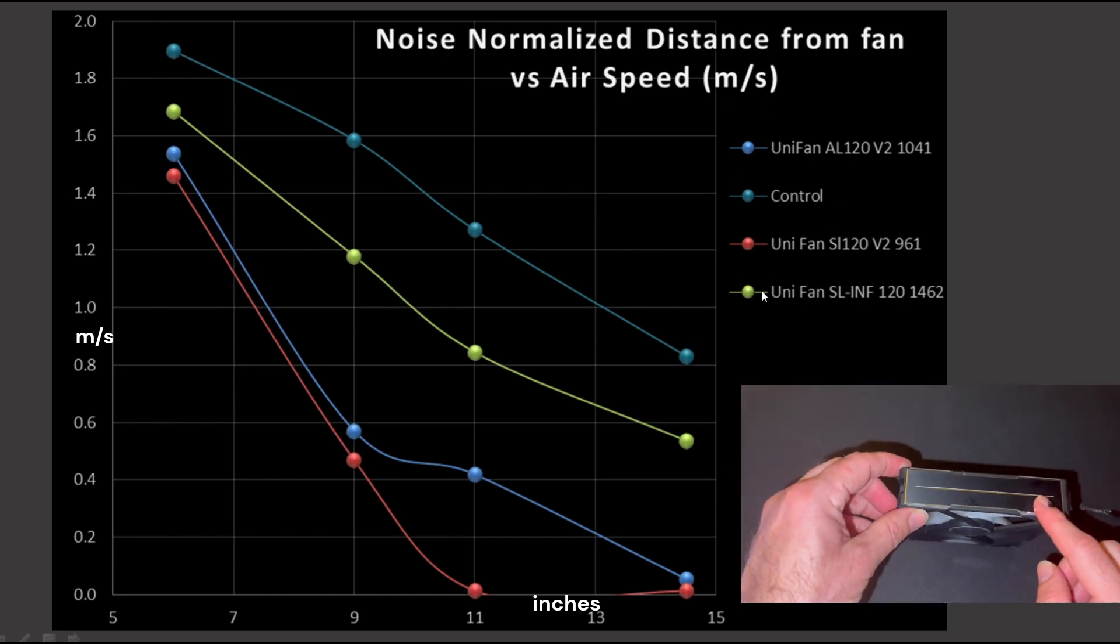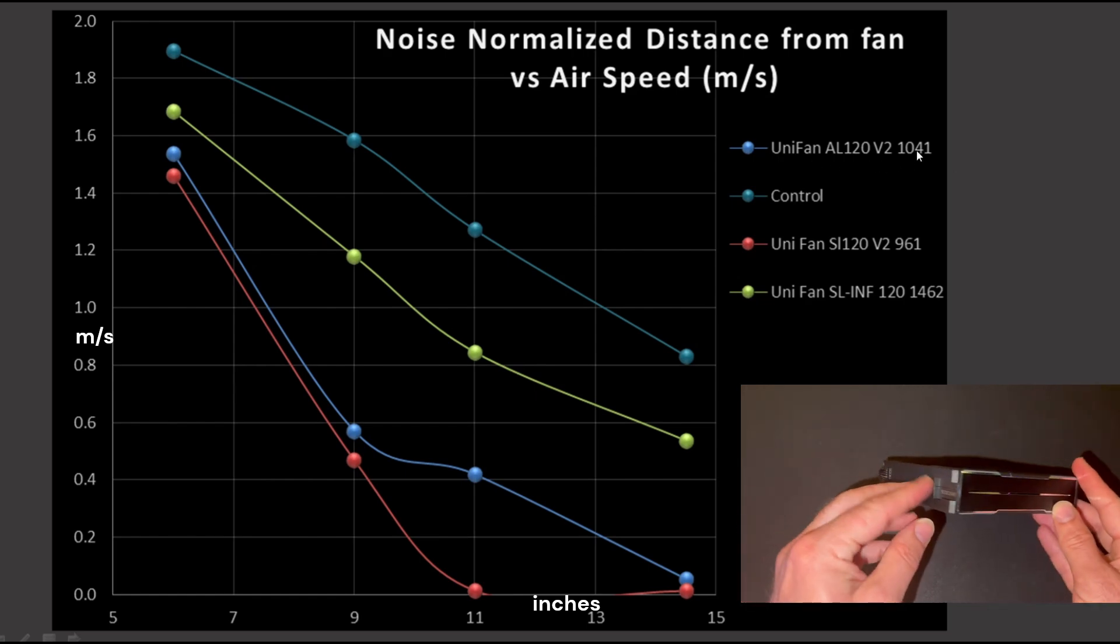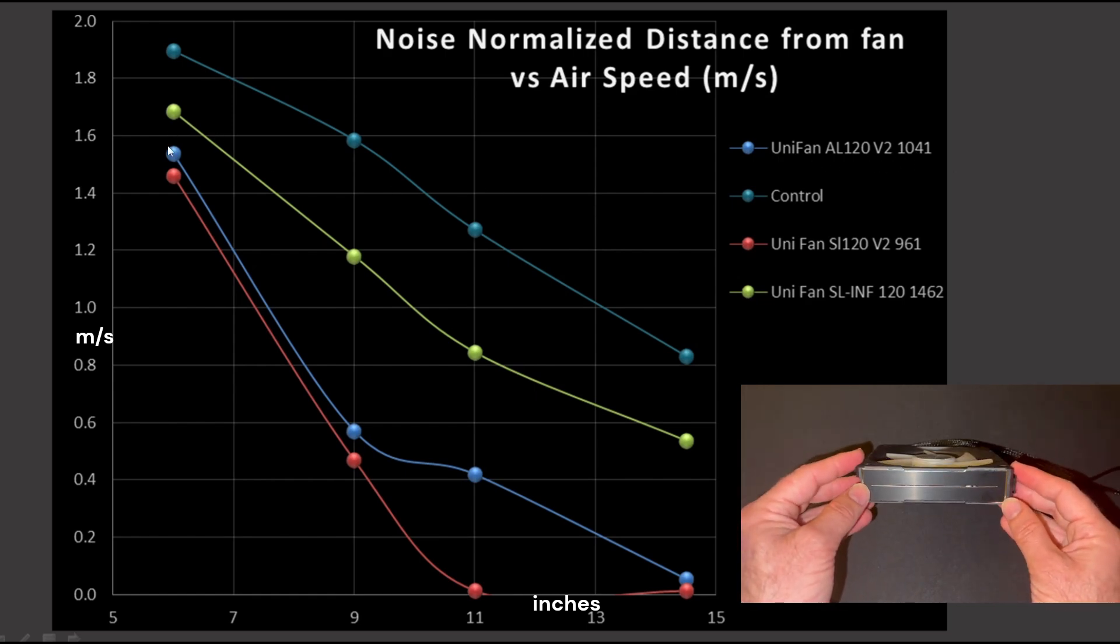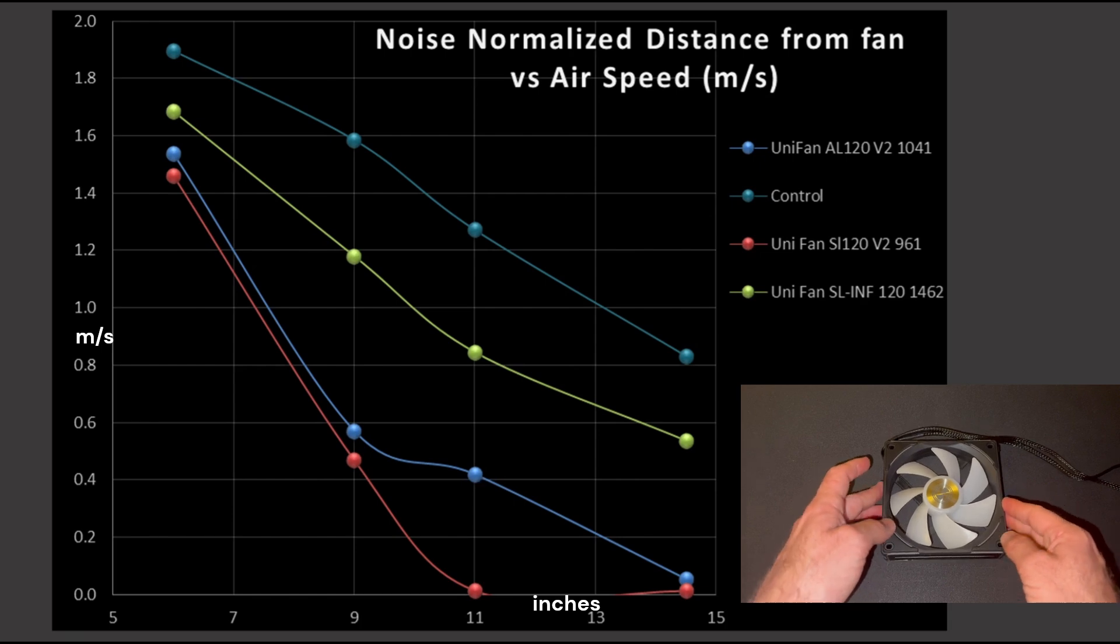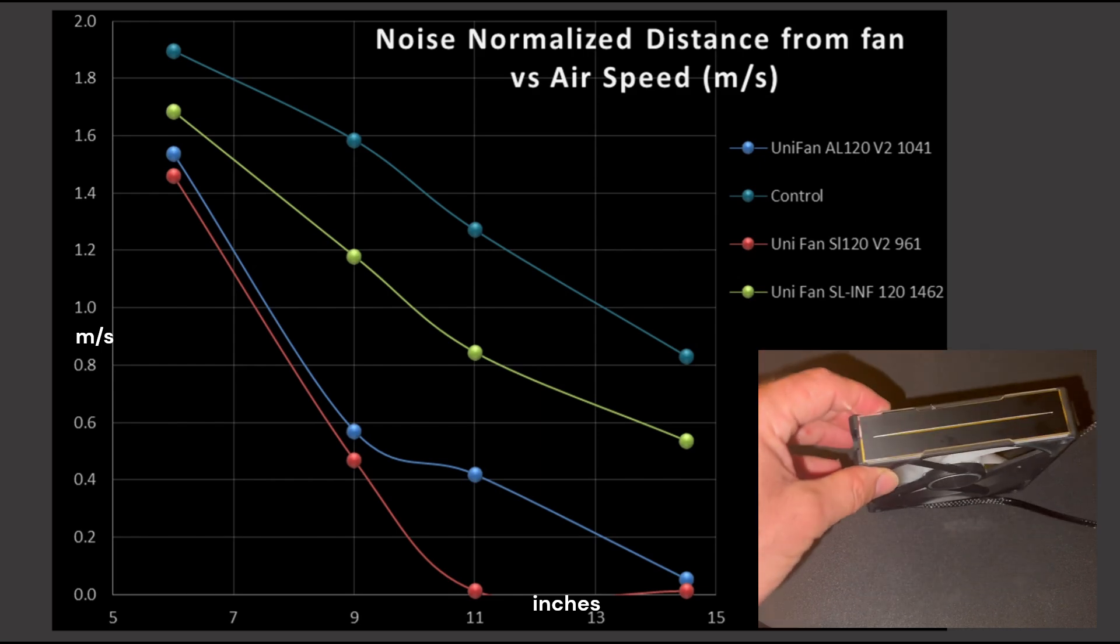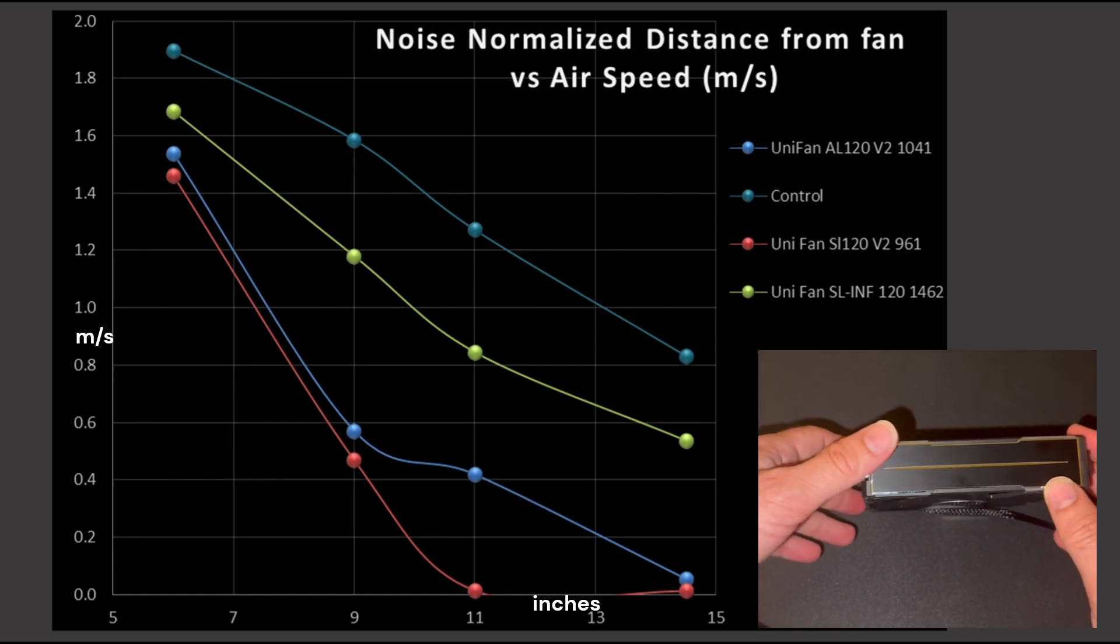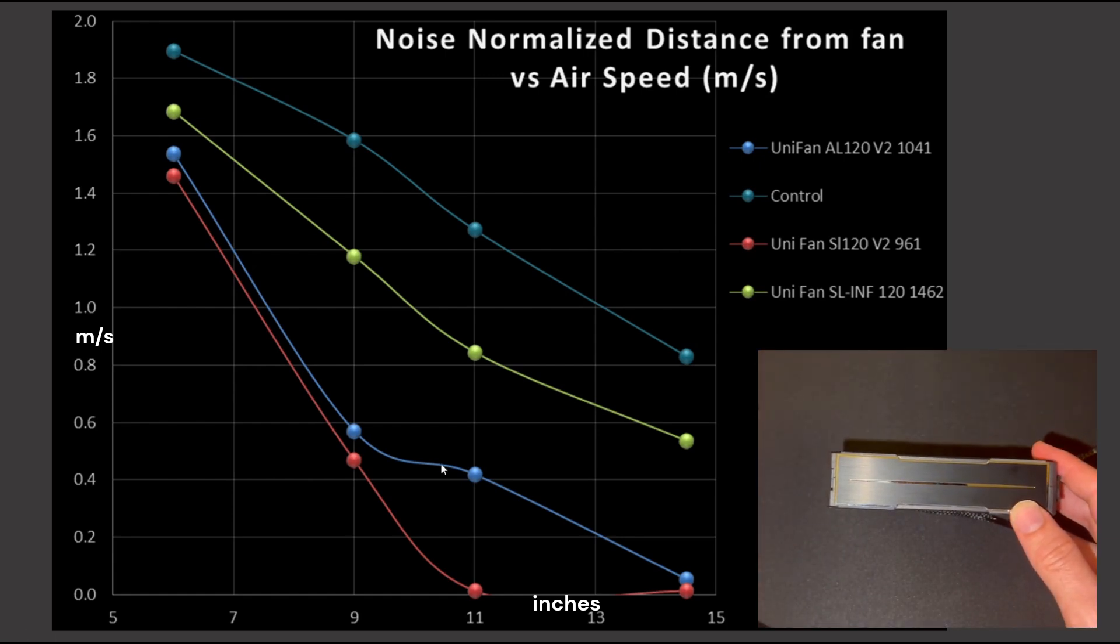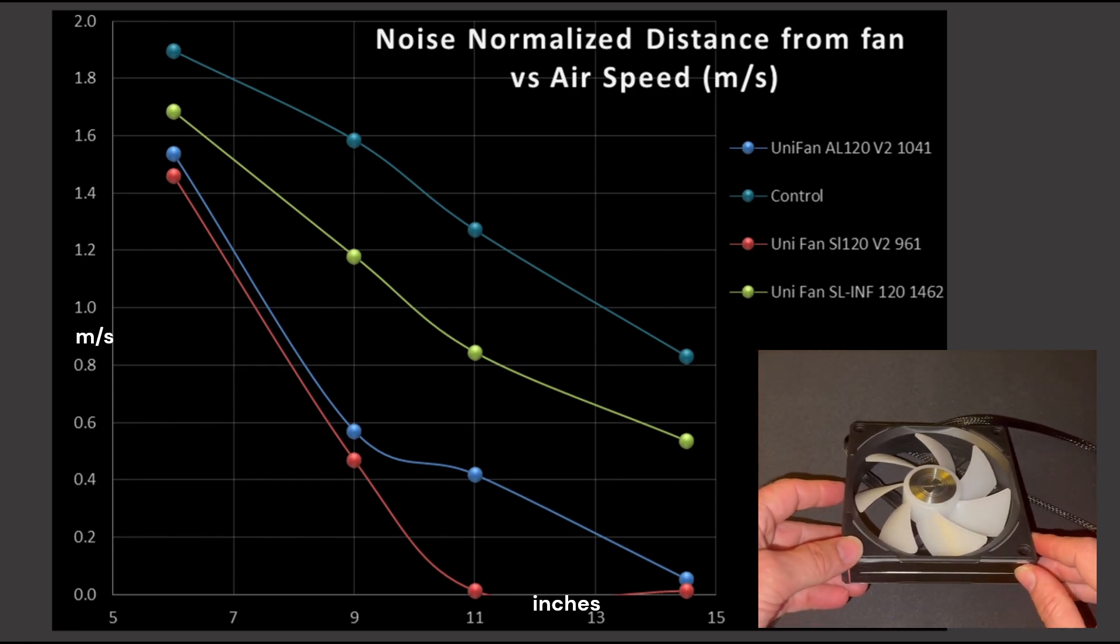So I have listed on here a bunch of other Lian Li fans, but the one most of interest for this video is the AL120 version 2, and it is this blue line. It is very clear that this fan tends to spew air off to the sides without creating a nice, focused airflow. I'm not sure why it's called AL, because I think the AL is supposed to stand for airflow, while the SLs are supposed to be pressure-optimized. So it's very clear to me that the AL is not airflow-optimized. Otherwise, it would have a very concentrated airflow pattern, while the Infinity is actually significantly better than it. But all of them are pretty poor compared to my control fan.